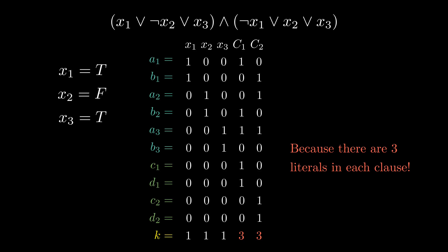Suppose the 3SAT instance is satisfiable. We first pick integers based on the assigned values of the variables. Since each clause is satisfied, there is at least 1 literal in every clause that is true. If all 3 literals in a clause C_i are true, then we do not need to include c_i or d_i in the subset because the sum of the digits in that column is already equal to 3. If only 1 literal in a clause C_i is true, then we need to include both c_i and d_i because the sum is only 1 originally. And if only 2 literals are true, then we include exactly 1 of c_i and d_i because the sum is originally 2. Note that c_i and d_i can contribute a value of at most 2 to the sum, requiring at least 1 literal in every clause to be true.